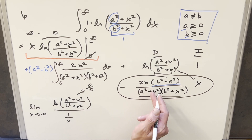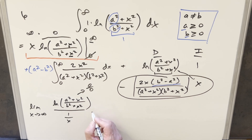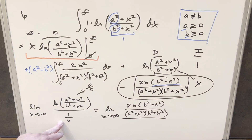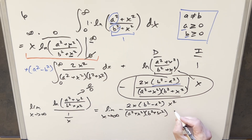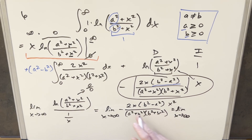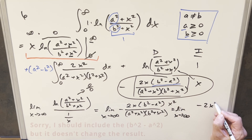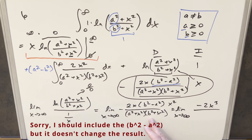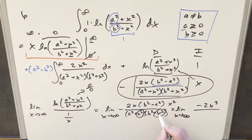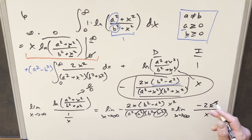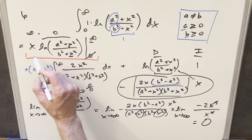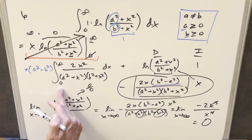Thankfully I already computed the derivative earlier, so I'll use that for the numerator. Taking the derivative of 1 over x gives minus 1 over x squared. Then we multiply x squared into the numerator. From here, we just focus on the dominant terms — the highest powers. Multiplying minus 2x by x squared gives minus 2x cubed in the numerator. Distributing in the denominator we get four terms, but the highest power term is x squared times x squared, or x to the fourth. Cancel three powers of x, and we just have minus 2 over x — plug in infinity, and this limit goes to zero. So the entire first piece goes to zero, and we just focus on the remaining integral.